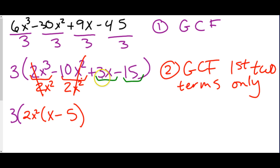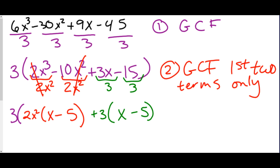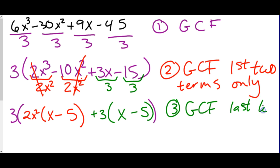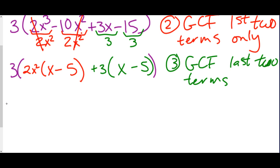Now we check the last two terms: what divides into 3x and 15? That would be 3. So we have plus 3, and we're left with (x - 5). So we greatest common factored the first two terms, then greatest common factored the last two terms.